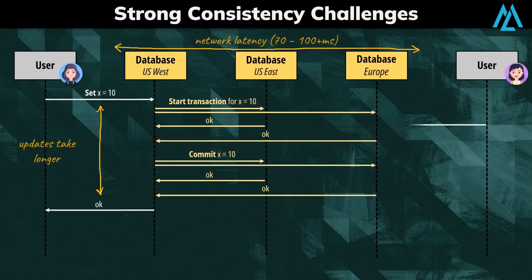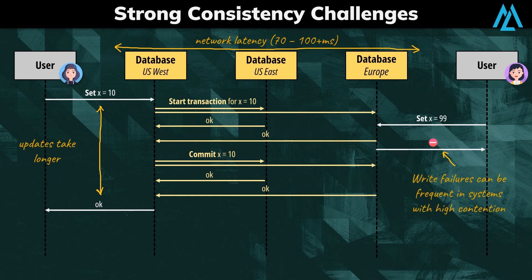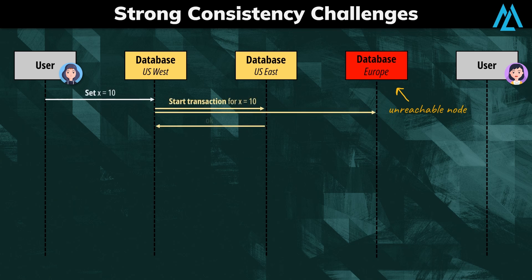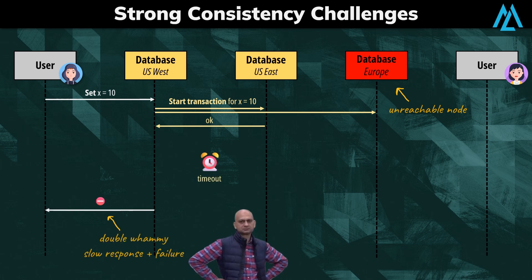The other challenge is scalability. If two users perform updates at the very same time in different nodes, strong consistency must guarantee that only one update is successful. This can cause more failures in systems that have heavy contention on writes. The last challenge is availability. Replication is not possible if two nodes are unable to communicate. In this case, all updates would fail until connectivity is restored between the nodes, causing a major impact on the user experience and potentially breaking SLAs.